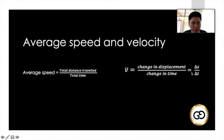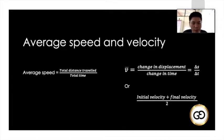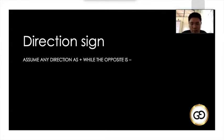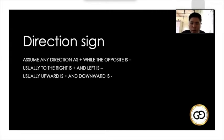So: speed relates to distance, velocity relates to displacement. We can write average velocity as the final position minus the initial position over the change in time, or when conditions allow, as the initial velocity plus the final velocity divided by 2. For direction sign: usually to the right is positive and left is negative; upward is positive and downward is negative — but you can choose based on the problem.